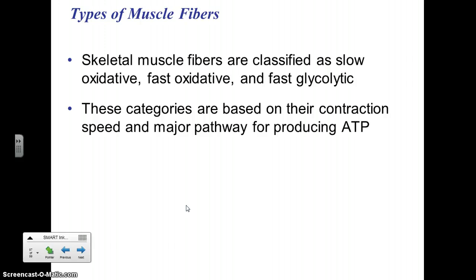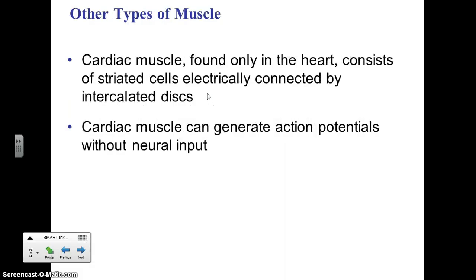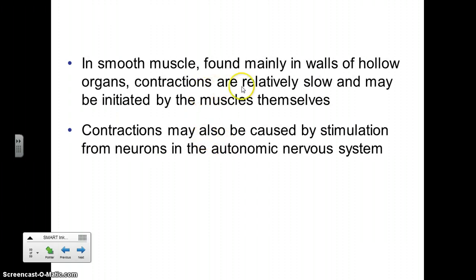Skeletal muscle comes in different types: slow twitch and fast twitch. The ratio of these you have can determine whether you're a better sprinter or marathon runner. Cardiac muscle has the sinoatrial and atrioventricular nodes, so nerve cells are not required to cause it to contract. Smooth muscle surrounds the digestive tract and is stimulated by neurons as part of the autonomic nervous system.